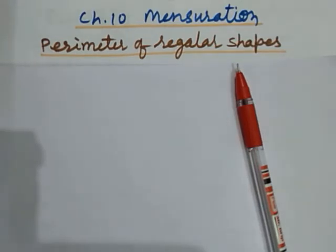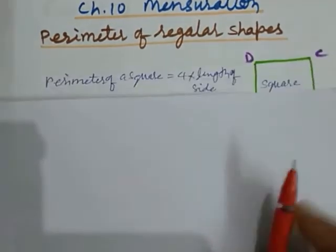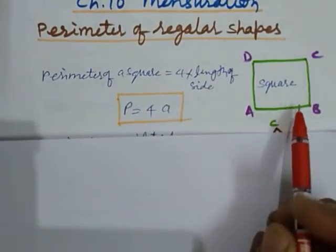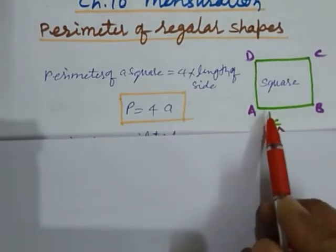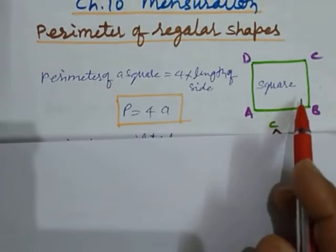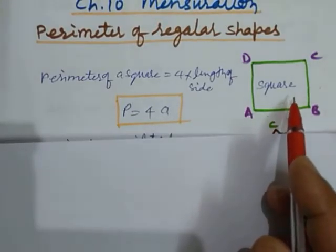Now in this we learn perimeter of regular shapes. This is a square which is a regular shape because all the sides of this square are equal. That's why this is a regular shape.